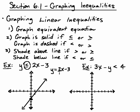So in this first example, we do have less than or equal to, so we do have a solid line. If it was strictly less than or strictly greater than, we would need to make that line a dashed line or a dotted line. We'll see that in the second example.